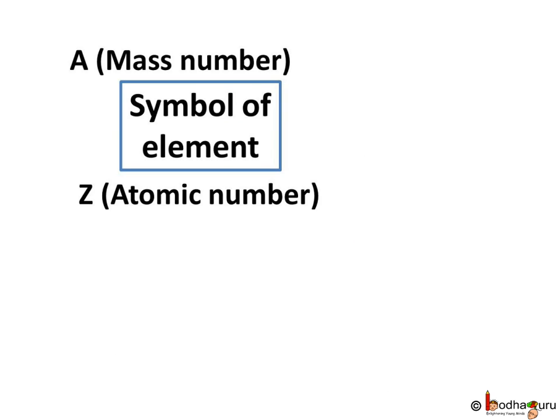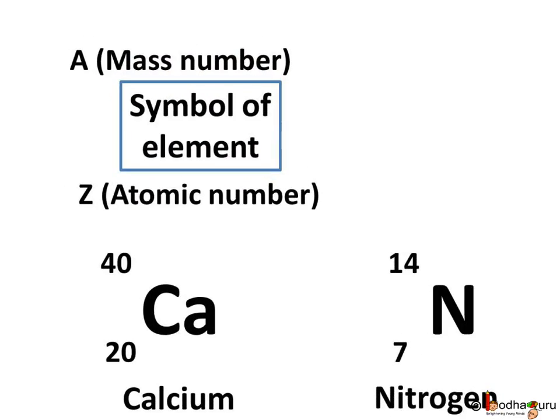Now, how do we represent an atom using the symbol of an atom, its mass number, and atomic number? It is written as the symbol of an element with the mass number at the top left of the symbol as a superscript, and the atomic number is written at the bottom left as the subscript. Hence, a calcium atom is represented as Ca — the symbol for calcium — with 40 as the superscript and 20 as the subscript.